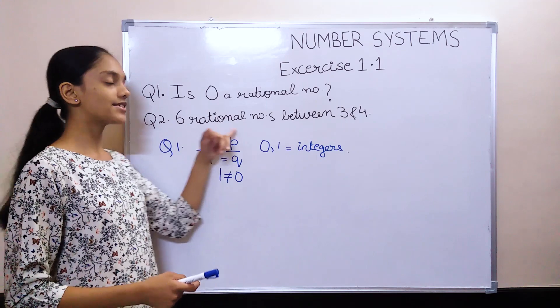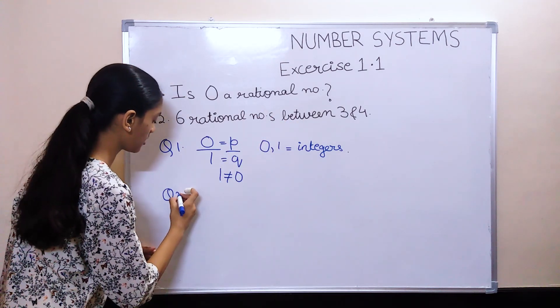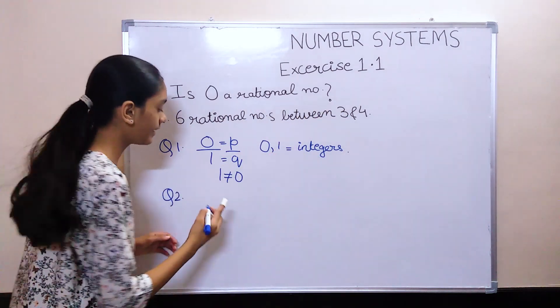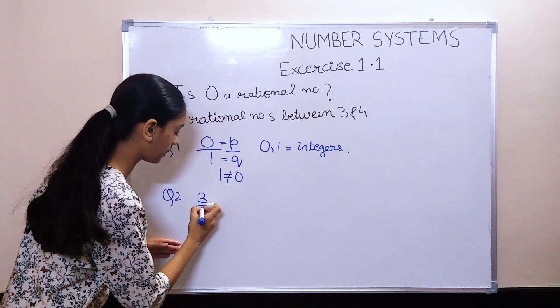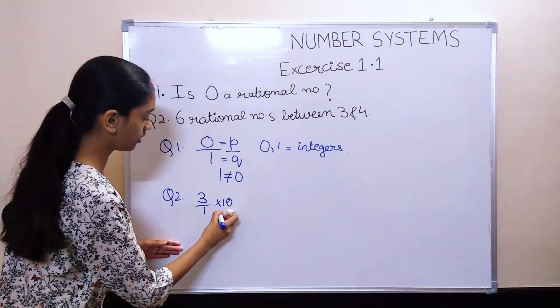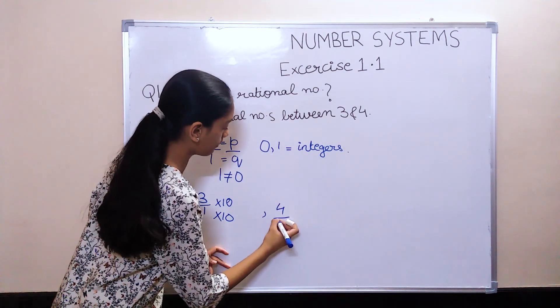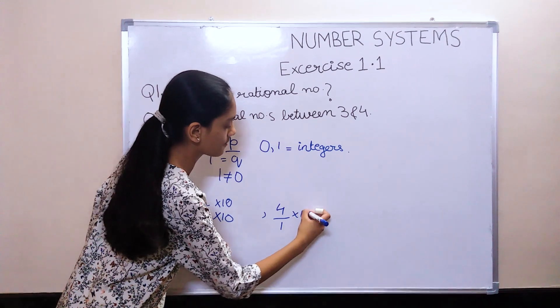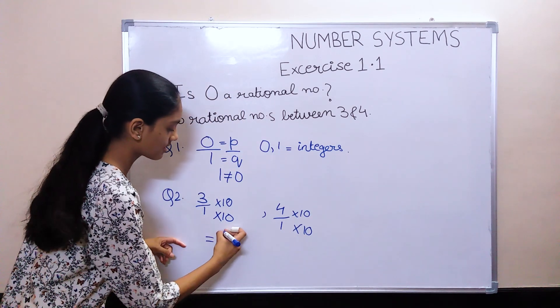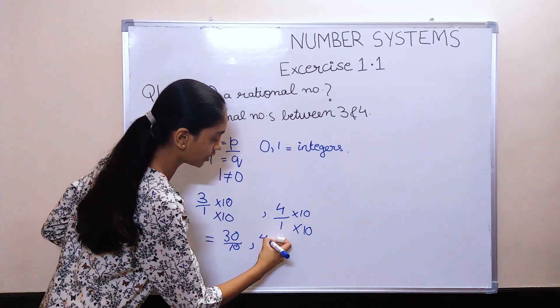we have to find 6 rational numbers between 3 and 4. So for that, we will multiply 3 and 4 by 10. We would write 3 upon 1 times 10 in both numerator and denominator, and 4 upon 1 times 10. Which gives us 30 upon 10 and 40 upon 10.